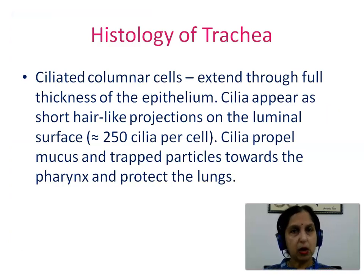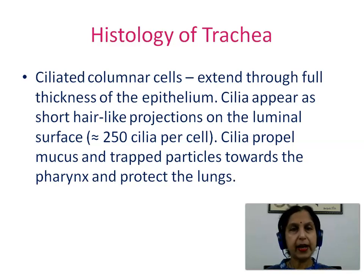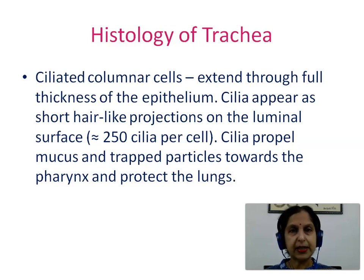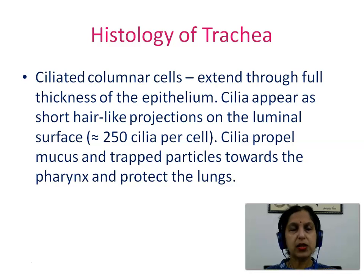Ciliated columnar cells extend through the full thickness of the epithelium. Cilia appear as short hair-like projections on the luminal surface, approximately 250 cilia per cell. Cilia propel mucus and the trapped particles towards the pharynx, and thus they protect the lungs.